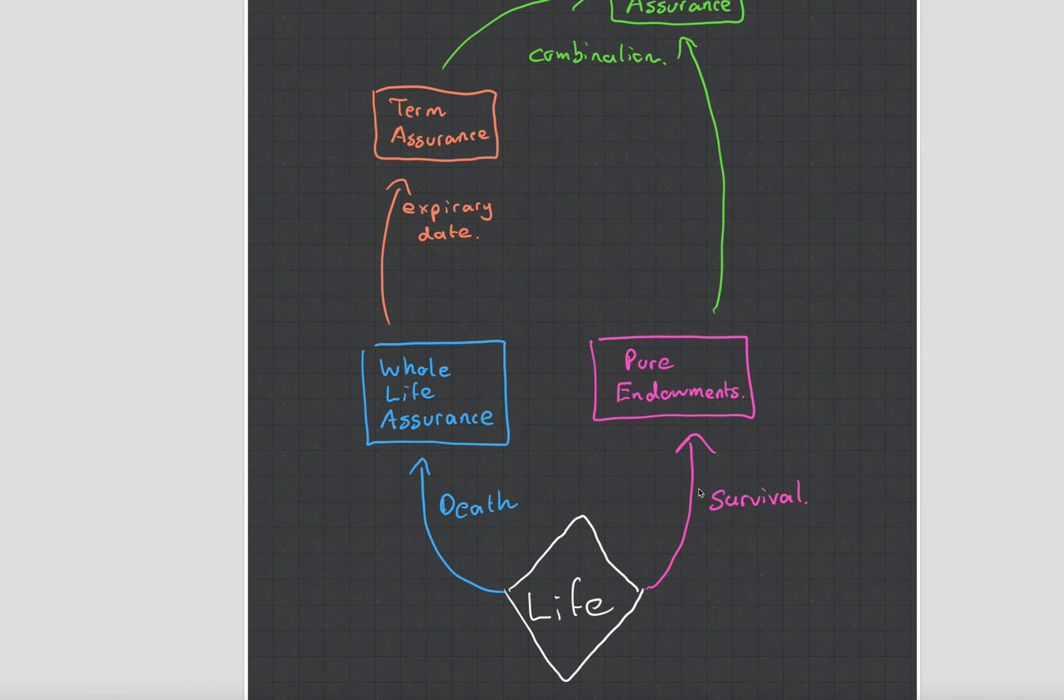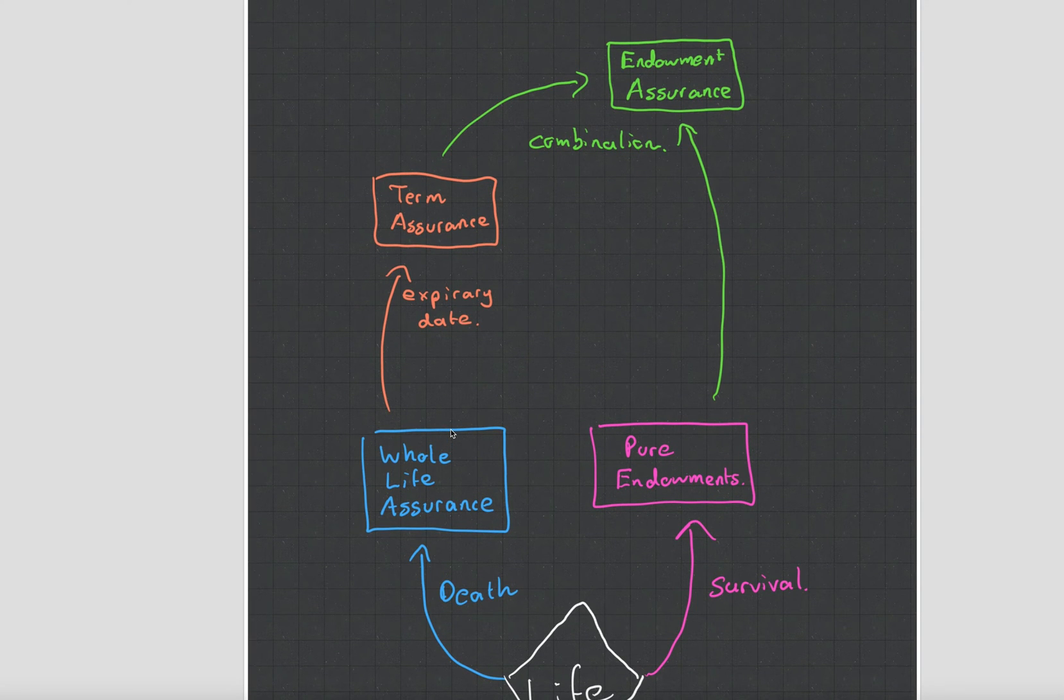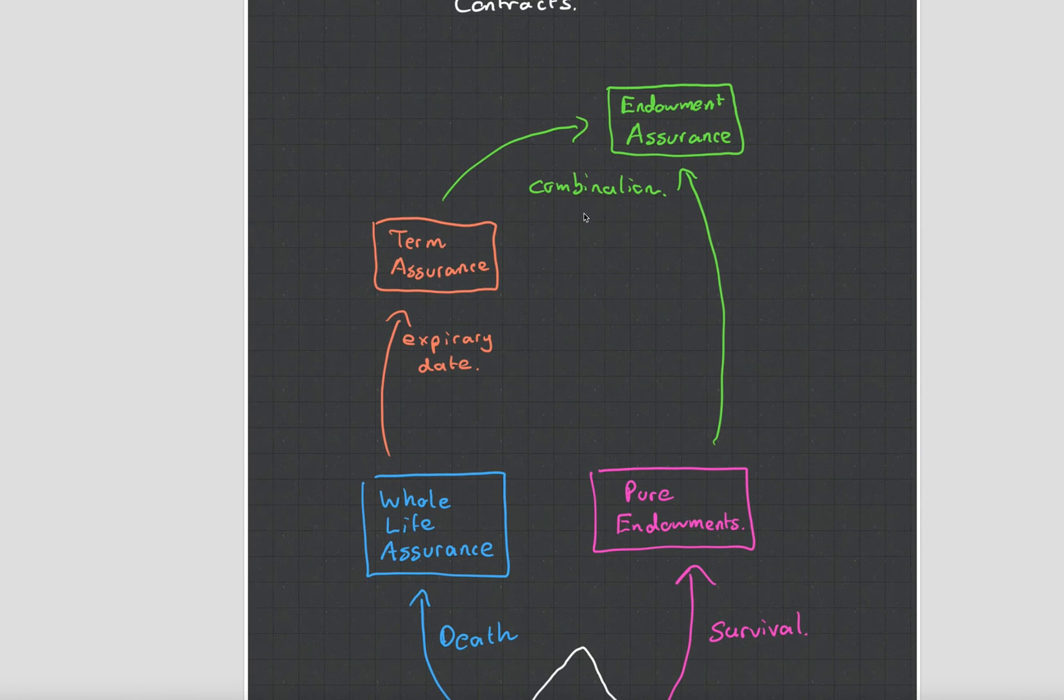What I mean by the pink one being pure endowment based on survival means that if you survive to a certain age this contract will pay you money. If you die this contract will pay you money. Now this contract depends or goes infinitely into the future so if you put an expiry date on it it becomes known as a term assurance and if you combine a term assurance and a pure endowment you get something known as an endowment assurance.